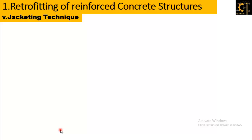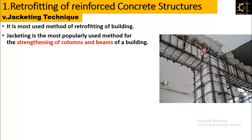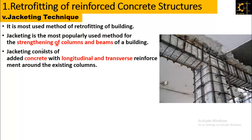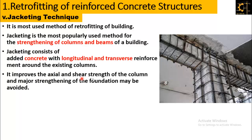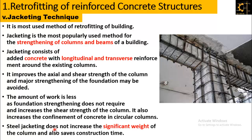The fifth technique of retrofitting is the jacketing technique, which is the most popularly used method for strengthening columns and beams of a building. Jacketing consists of adding concrete with longitudinal and transverse reinforcement around the existing columns. It improves the axial and shear strength of the column and major strengthening of the foundation may be avoided. Steel jacketing also increases the confinement of concrete in circular columns, does not add significant weight to the column, and saves construction time.